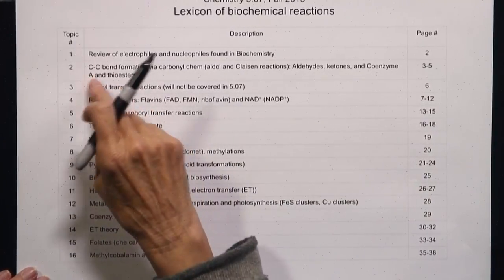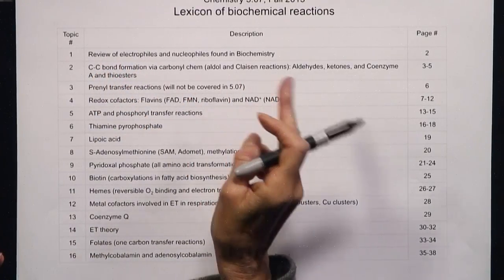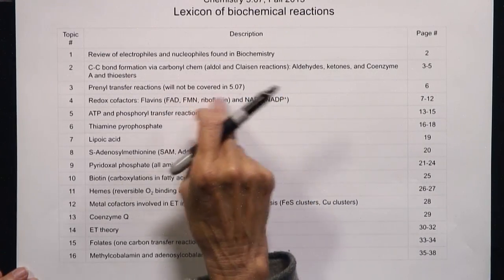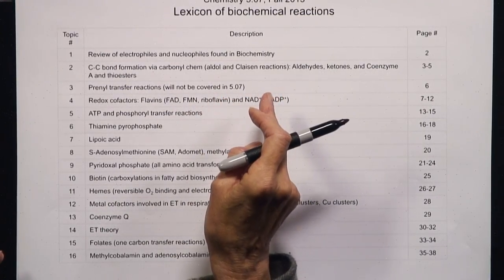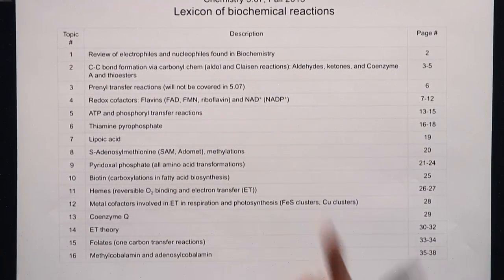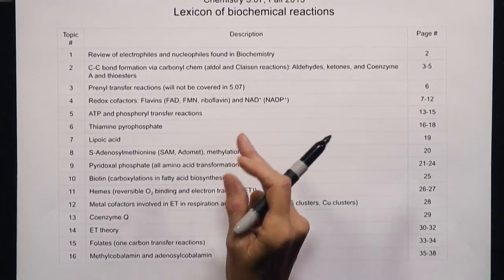Within the lexicon, we're going to show you the chemistry of how these vitamins work. We'll talk about how carbon-carbon bonds are made and broken, fatty acid metabolism, sugar metabolism. We'll talk about oxidation-reduction reactions and the vitamins used for that transformation. We'll talk about energy storage and the energy currency in the cell — ATP, et cetera.